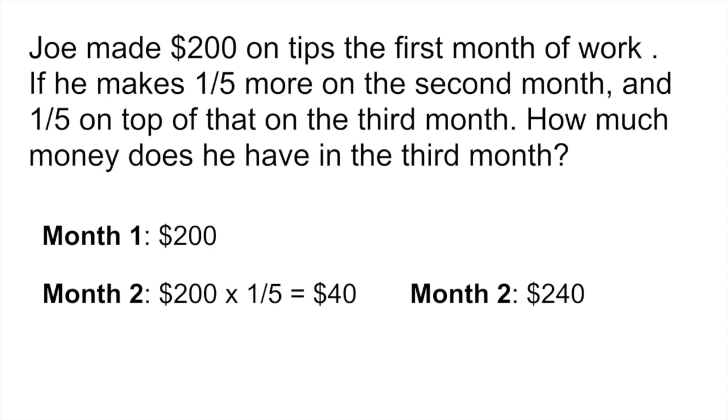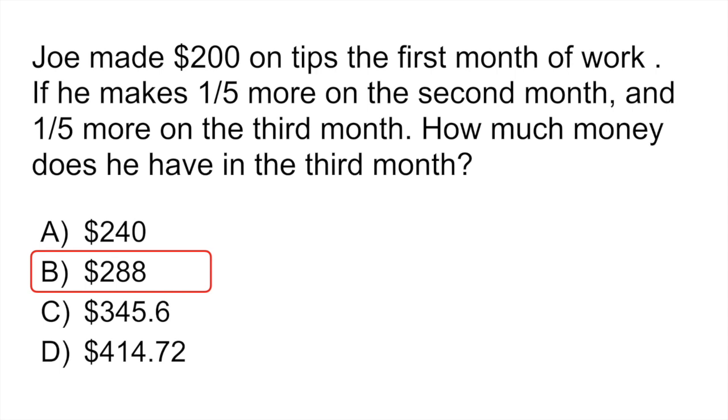And then month three, on top of that money, on top of the $240 he makes another one-fifth. So you would multiply $240 by one-fifth and that gives you $48. So at the end of the third month he has the $240 he started with plus that $48 extra he made for a total of $288. Your correct answer would be B.